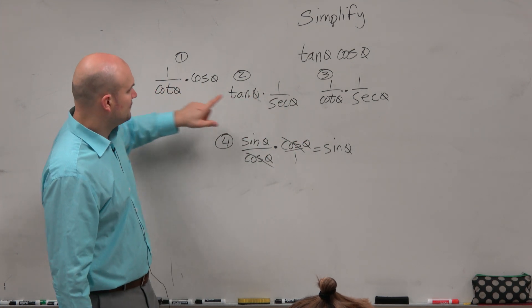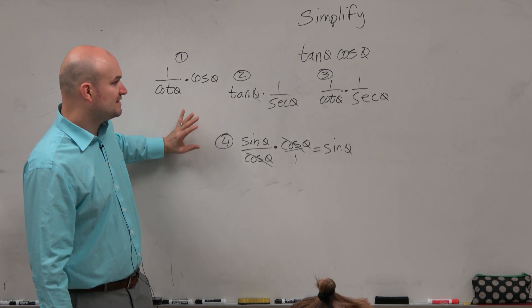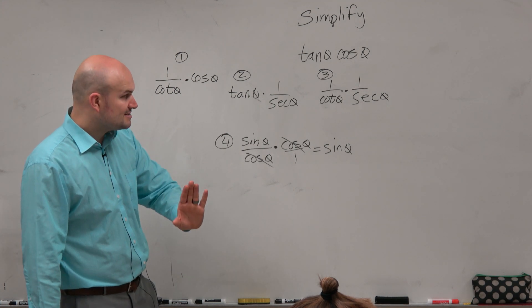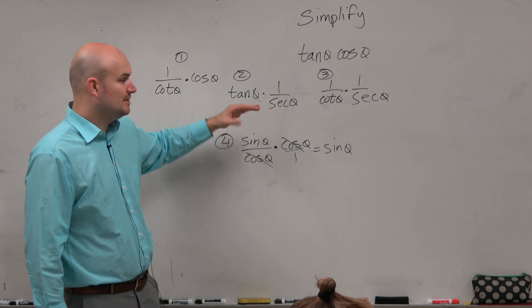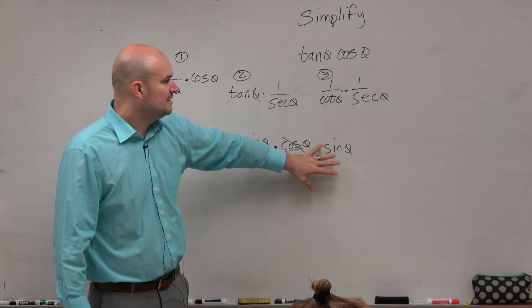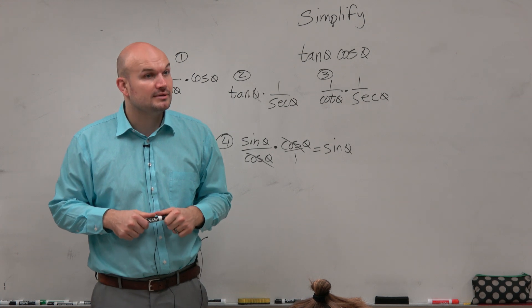Do you see how all of three of these, or out of four of these, the only one that kept everything in terms of sines and cosines was number four? Right? So it's not always the case. But a lot of the time, writing things in terms of sines and cosines will allow you to see, allow you to combine terms, or allow you to apply the division property. Yes?